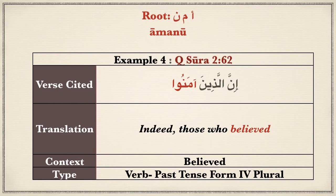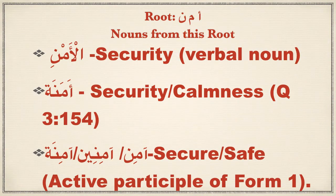Now let's move on to the nouns from this root. The first noun is aman, to mean security. The second word, amanatun, also means security but has another related meaning of calmness. In Surah 3 verse 154, when Muslims had anxiety, Allah sent amanatun. Some translated it as security and some said calmness, which was instilled in the form of drowsiness or sleep.